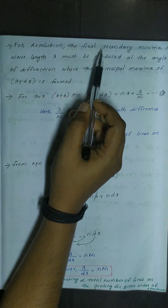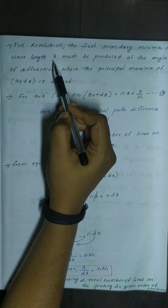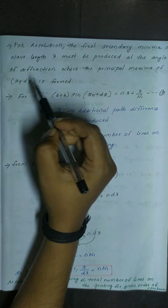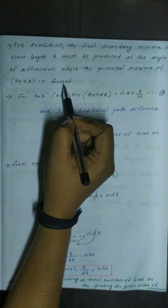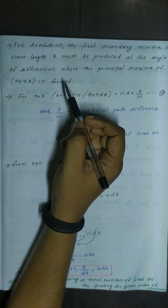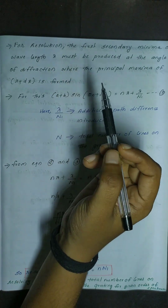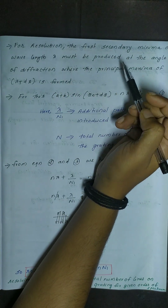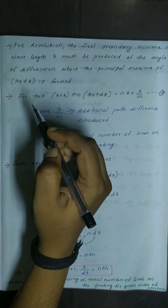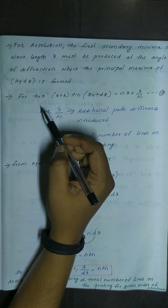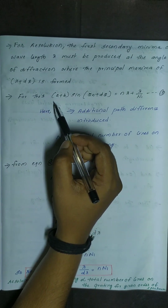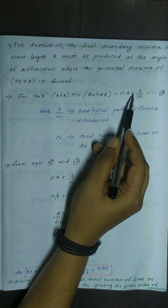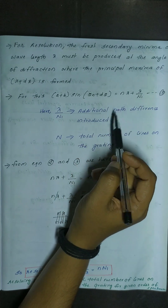For resolution, the first secondary minima of wavelength lambda must be produced at the angle of diffraction where the principal maxima of lambda plus d lambda is formed. We write the condition for the minima of a spectral line as: (a + b) sin(theta_n + d theta) = n lambda + lambda / N1, where N1 is the total number of lines on the grating.